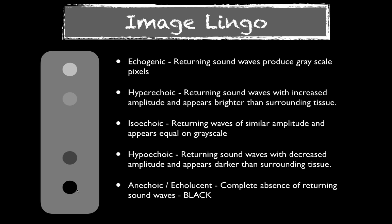Because there's no sound waves returning at that depth, it creates a black spot like this here on our screen, and that's called an anechoic area. The opposite is when you have areas with a lot of sound waves returning at high power and intensity, creating an area that's hyperechoic or brighter than everything else. You'll often see that with bones or at the interface between organs. So we have our two extremes: hyperechoic, which is a white or bright area, and anechoic, which is black.